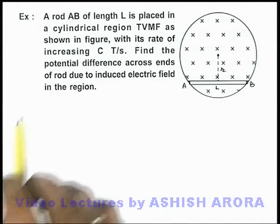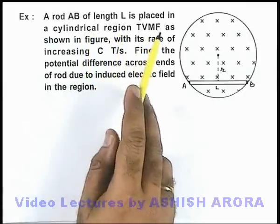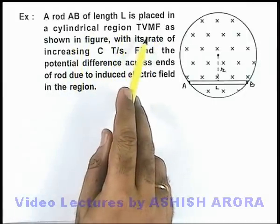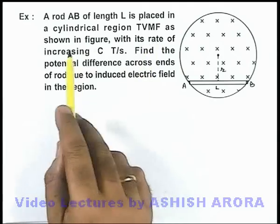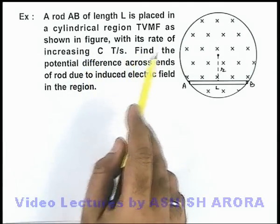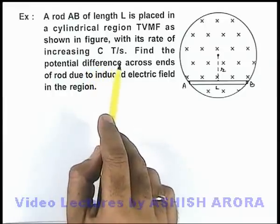In this example, we are given that a rod AB of length L is placed in a cylindrical region with time-varying magnetic field as shown in figure, with its rate of increasing C tesla per second.